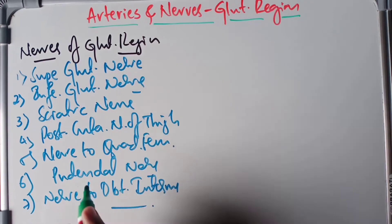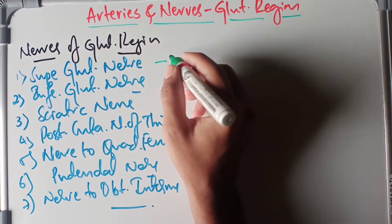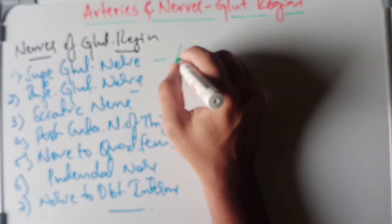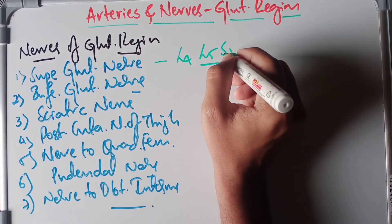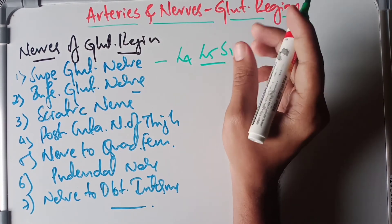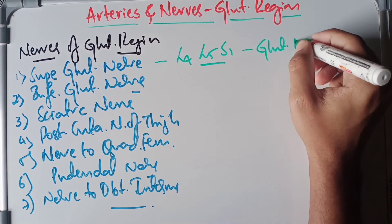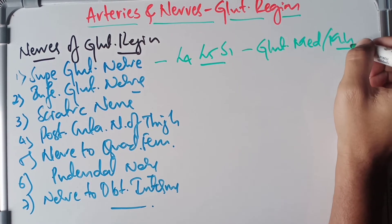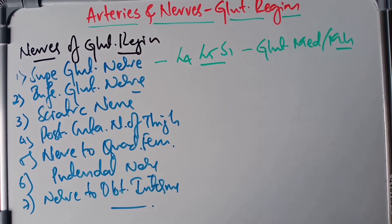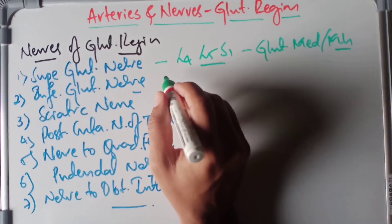All these nerves arise from the sacral plexus. Beginning with the superior gluteal nerve, it arises from the ventral rami of L4, L5, and S1, and it supplies the gluteus medius and the gluteus minimus muscles.